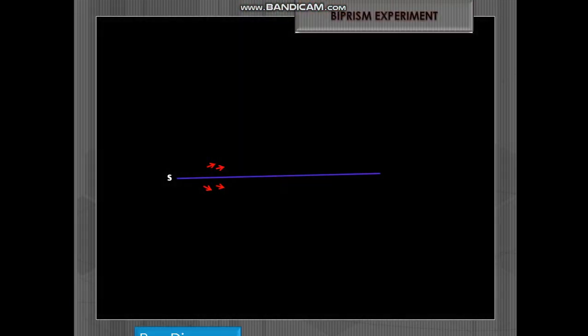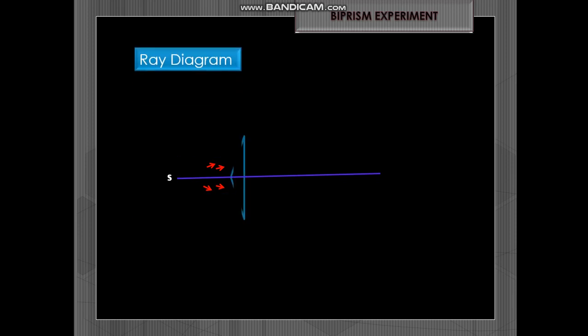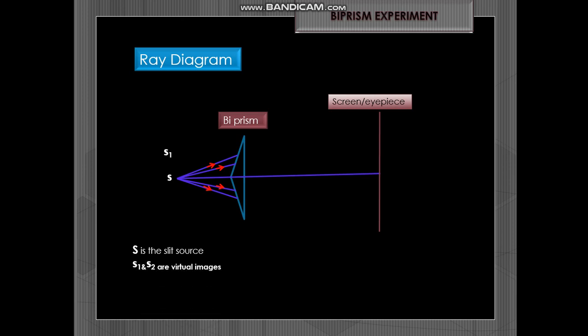Now let's see the ray diagram for the biprism experiment. The biprism is placed in front of the source and a screen is kept at a larger distance. The rays of light emerging from S pass through the biprism.